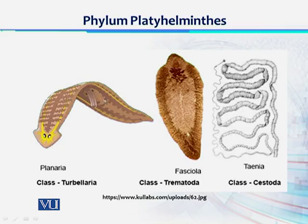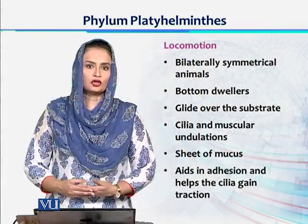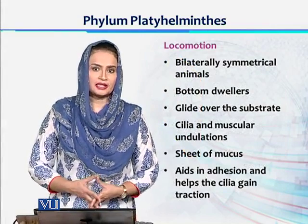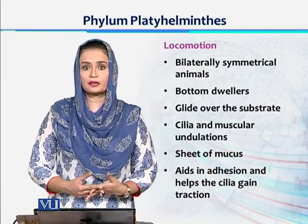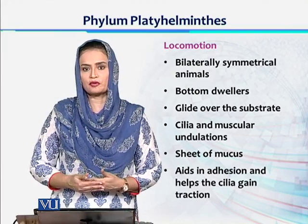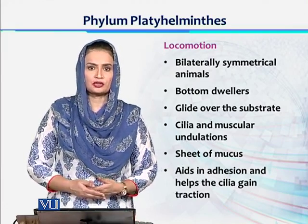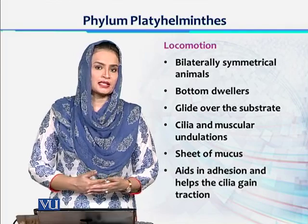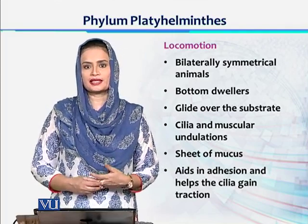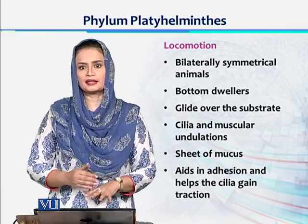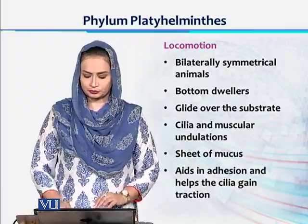Their body is dorsal-ventrally flat or compressed. For locomotion, they don't have any dedicated locomotory structures. They are mostly dependent on cilia present on the epidermal cells, and longitudinal muscles generate undulations in the body, which allow the animal to glide along the body surface. The body surface can also secrete mucus, forming a slimy layer on the substrate, which helps the organism glide through.